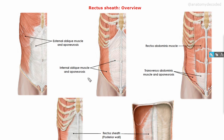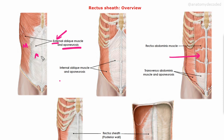Here we can see the muscles of the anterior abdominal wall. Identify this first muscle — that's the external oblique muscle with its aponeurosis. This is the muscle, and this is the aponeurosis which is covering the rectus abdominis muscle. So basically the external oblique is forming the anterior wall of the rectus sheath. The rectus sheath has two walls — one on the anterior aspect and one on the posterior aspect.